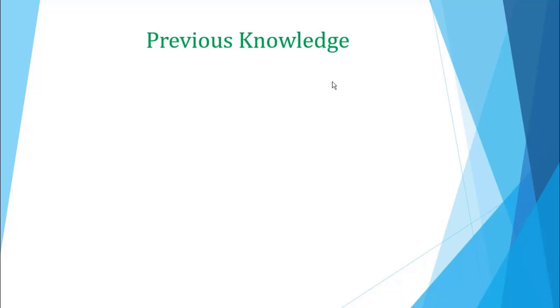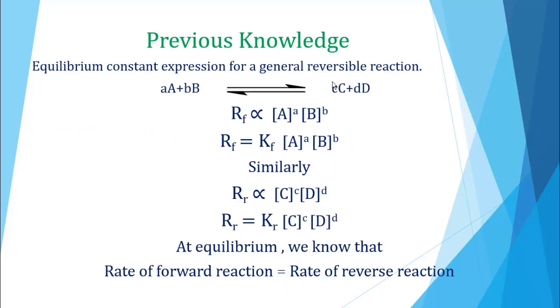Aaj ka lesson shuru karne se pehle kuch pichle lesson ke baare mein discuss kar lete hain jo ke bahut zaroori hai aaj ka lesson samajhne ke liye. In the law of mass action, you have studied the derivation of equilibrium constant. Suppose this is a general reversible reaction. Capital A and capital B are reactants, capital C and capital D are products, and small a, b, c, d are the number of moles of reactants and products.